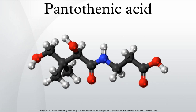Pantothenic acid is the amide between pantoic acid and beta-alanine. Its name derives from the Greek pantothen, meaning 'from everywhere,' and small quantities of pantothenic acid are found in nearly every food, with high amounts in avocado, whole-grain cereals, legumes, eggs, meat, royal jelly, and yogurt.